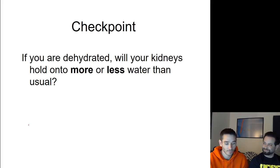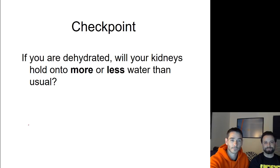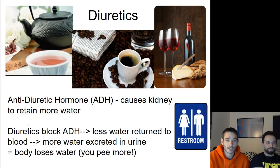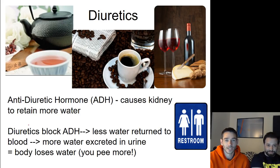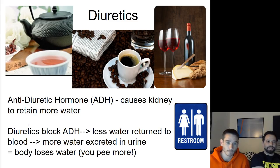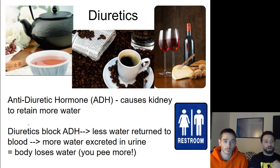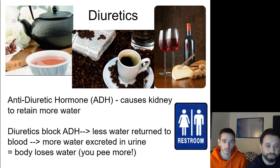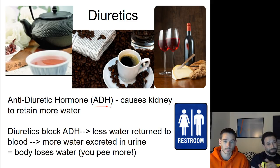We'll go over the challenge question in class. Now let's talk about diuretics. There's something called anti-diuretic hormone, or ADH, which causes your kidneys to retain more water. Things like coffee, tea, and alcohol are considered diuretics because they block ADH. So if ADH causes your kidneys to retain more water, and diuretics block ADH, that means less water is returned to your blood — meaning you pee more when you drink coffee, tea, or alcohol.